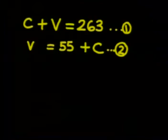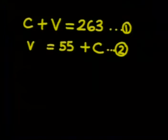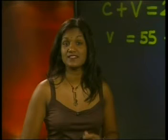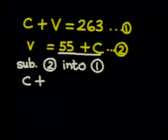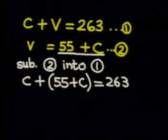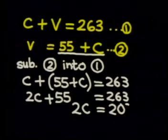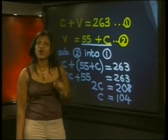Once you've reached this point, solving the problem is simple. Look at the two equations that we have set up. We have two equations with two unknown values. We know three methods of solving simultaneous equations to find C and V. The second equation already has V as the subject, so substitution should be easy. We can substitute equation 2 into equation 1. This means that Lucky has 104 CDs.